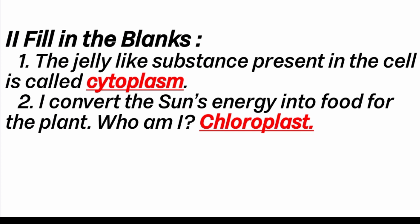Second section: fill in the blanks. First question: the jelly-like substance present in the cell is called dash. Answer is cytoplasm. Different types of cell organelles are found in the cytoplasm. Second question: I convert the sun's energy into food for the plant — who am I? Answer: chloroplast. Chloroplast is the food producer in plants. It is only found in plants and is used to produce food with the help of sunlight by the process of photosynthesis.